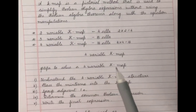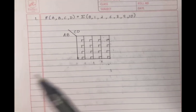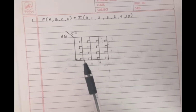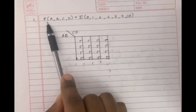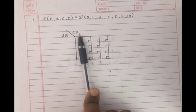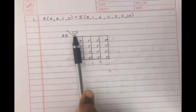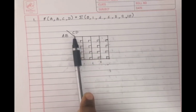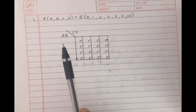These are the steps to solve a four-variable K-map. The first step is to understand the structure. A four-variable K-map consists of 16 cells representing all combinations of A, B, C, and D. The variables are split into two groups: the left side rows represent combinations of A and B, and the top side columns represent combinations of C and D.